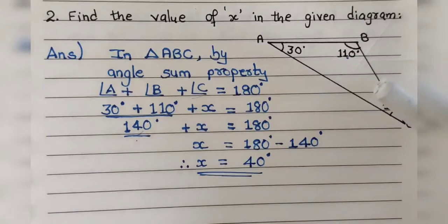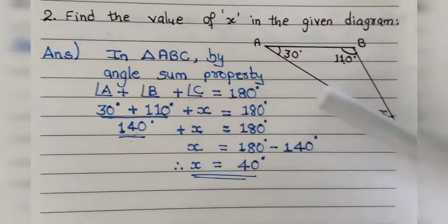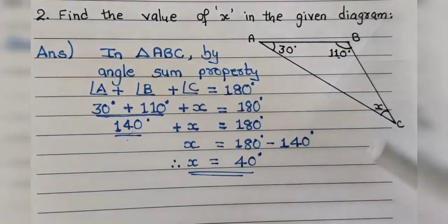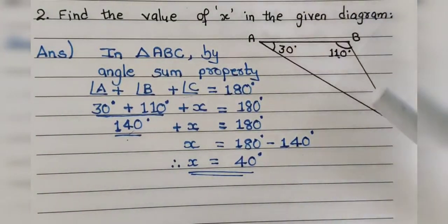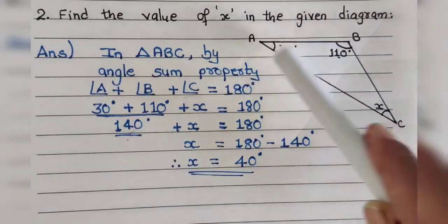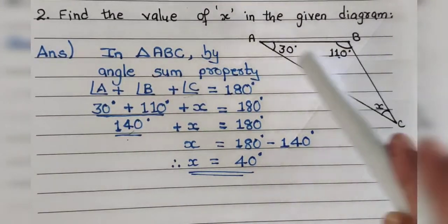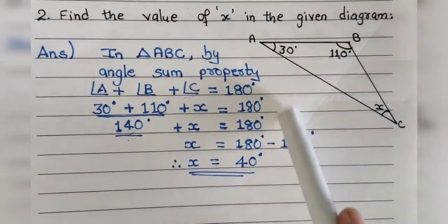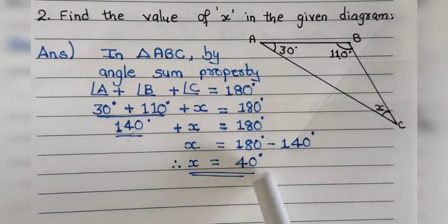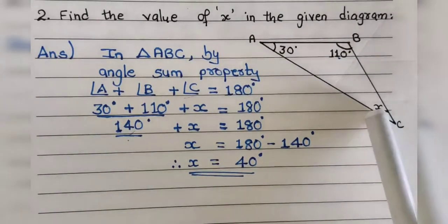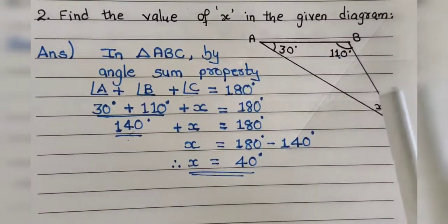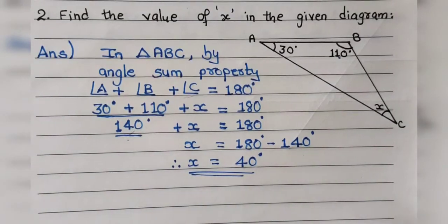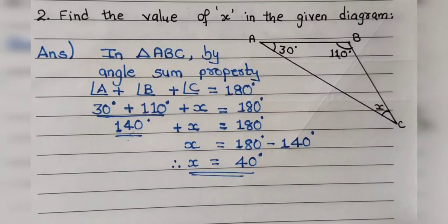It may happen that the triangle's name may change, the position may change, or the angle measures may change, but the method remains the same if x is in the interior of any triangle. Now let us move ahead.